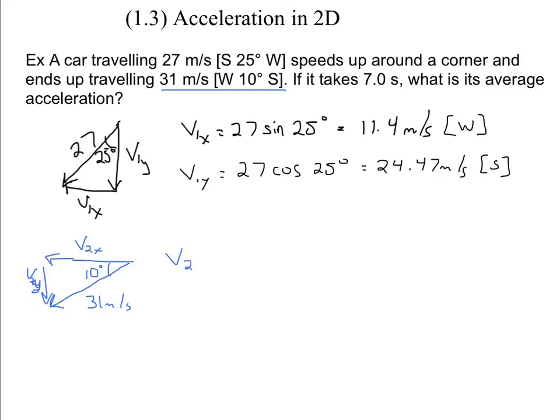To solve for those then, v2x is going to be 31 times the cosine of 10 degrees, and that is 30.53 meters per second. And for v2y... oh wait, that vector is not pointing south. All right, so now that we've got our components, this is going to look kind of like a projectile motion question.